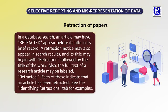In a database search, an article may have a 'retracted' label appear before the title. A retraction notice may also appear in search results, and the title may begin with 'retraction' followed by the title of the work. Also, the full text of the research article may be labeled 'Retracted.' Each of these indicates that the article has been retracted.